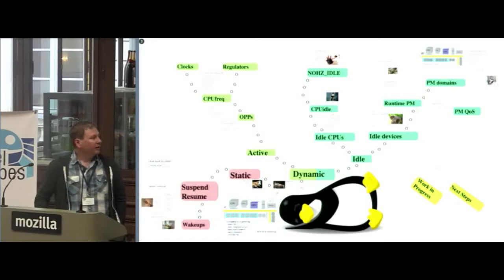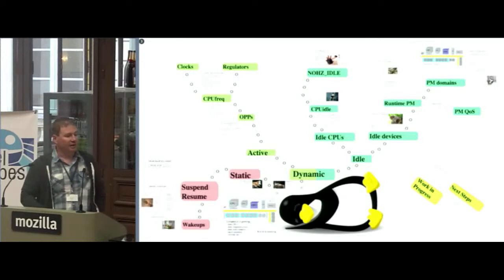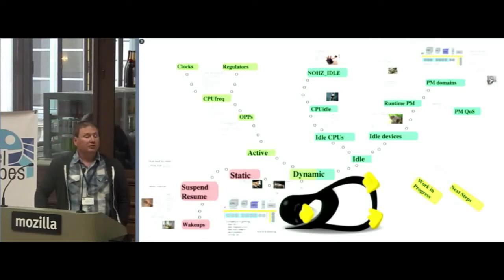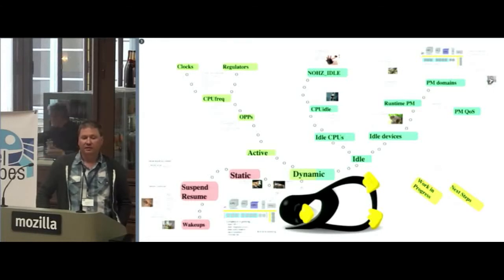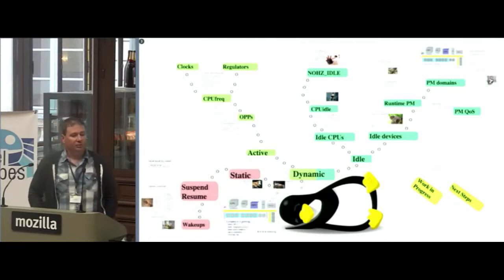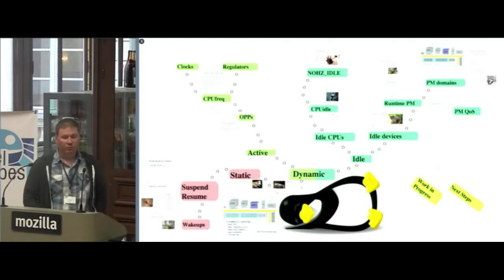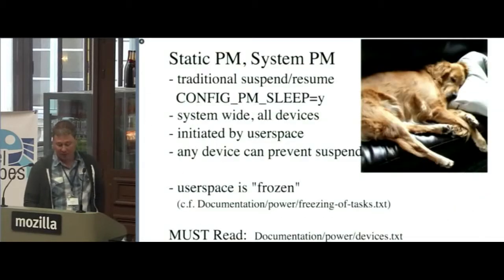These are all the topics I'm going to try to cover today — all the different pieces of the kernel power management. From bottom left over to the right is kind of how the kernel has evolved. For a long time, all anybody cared about was suspend-resume, kind of system-wide suspend-resume. As hardware has gotten more complex, the kernel has had to evolve a whole bunch of different types of power management features. I'm going to go through these one by one, starting with what we call static power management.